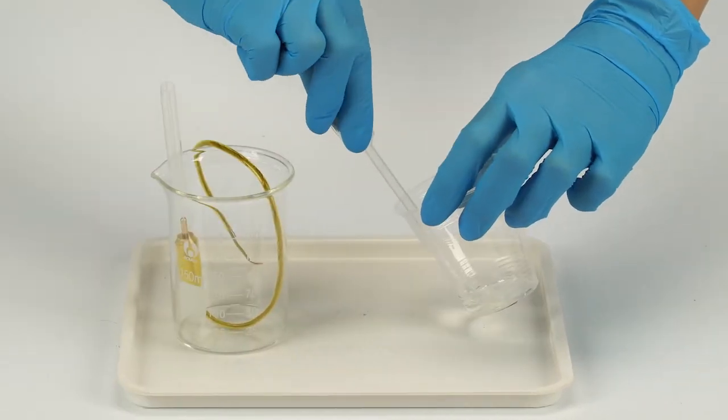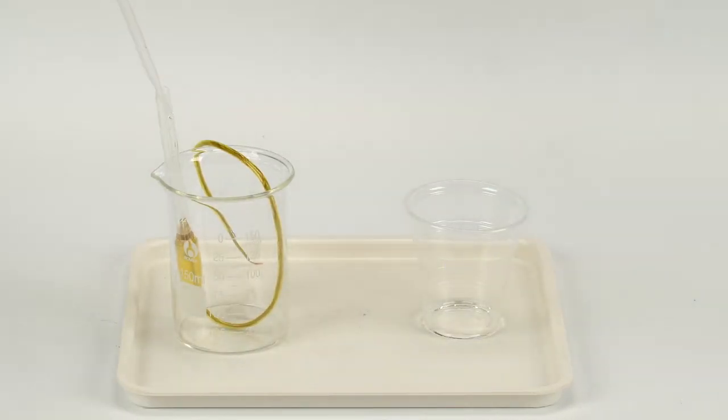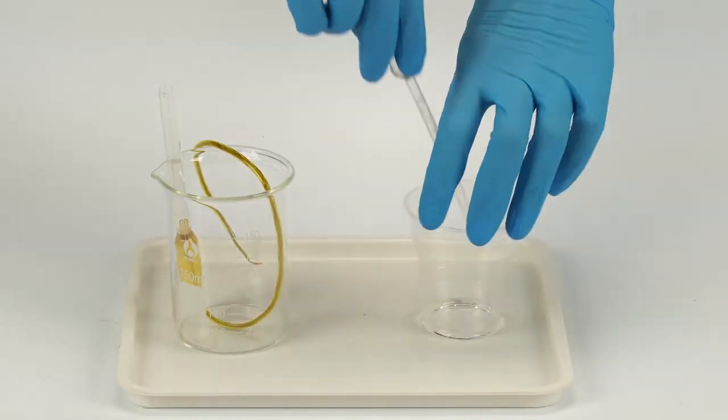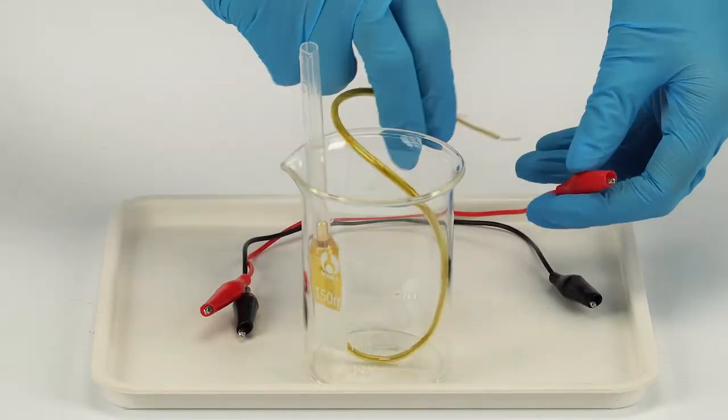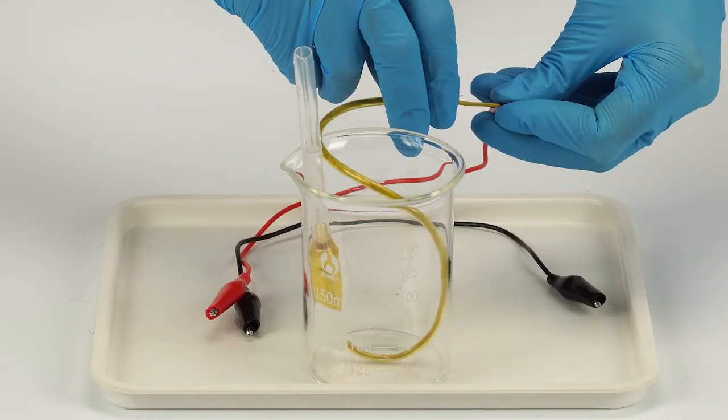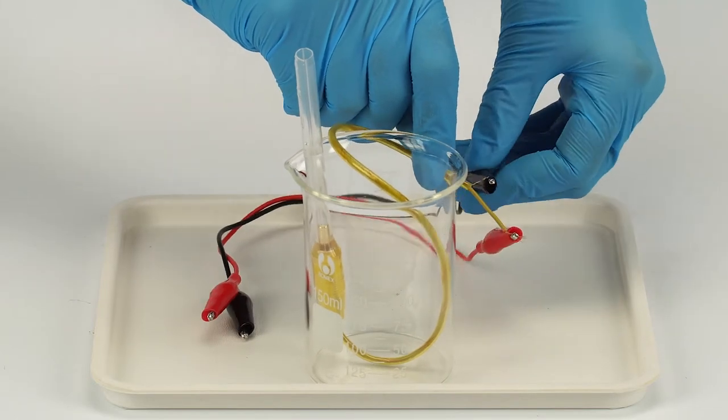Fill the setup pipette halfway with sodium hydroxide NaOH solution. Use a pipette. Hook up the crocodile clips. The red clip to the longer wire and the black clip to the shorter wire.